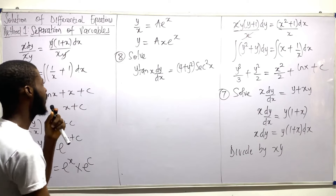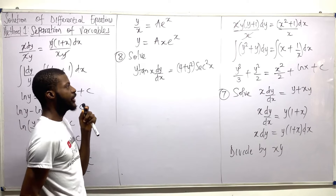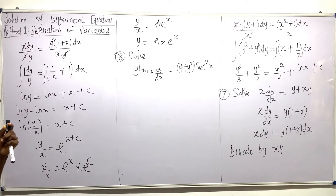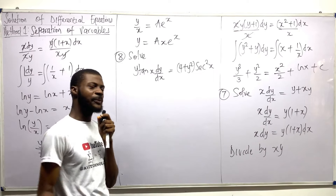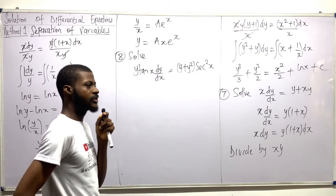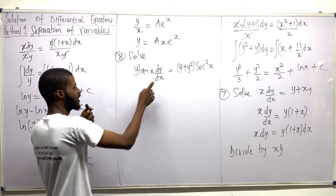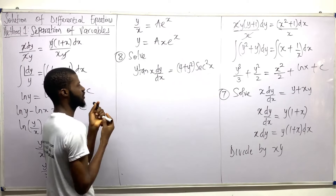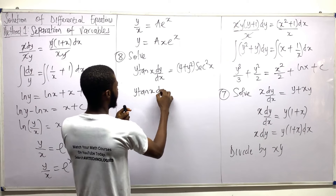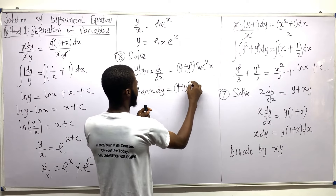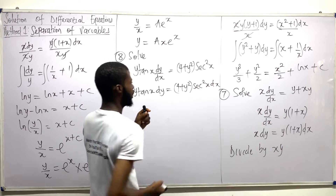So question 8. We're asked to solve y times tan x dy equals 4 plus y squared sec squared x dx. So what do we do in this case? It's still the same thing — you need to separate the x from the y. Let us separate x from y. First, take this dx here so that there will be no fractions anymore. So this is y times tan x dy equal 4 plus y squared sec squared x dx.